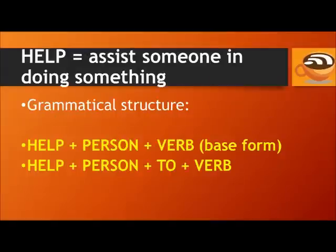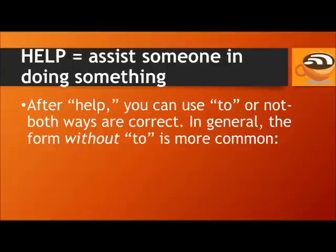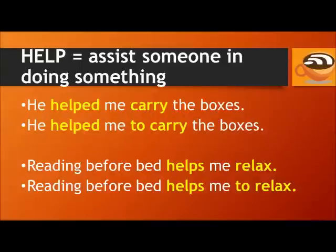Finally, we have the word 'help,' meaning to assist someone in doing something. With 'help,' there are two possible grammatical structures: help + the person + the base form of the verb, or help + the person + to + the verb. After 'help,' you can use 'to' or not — both ways are correct. In general, the form without 'to' is more common in everyday English.